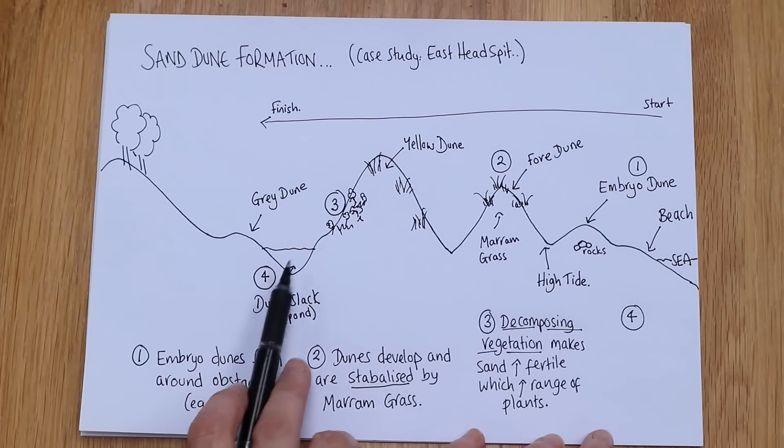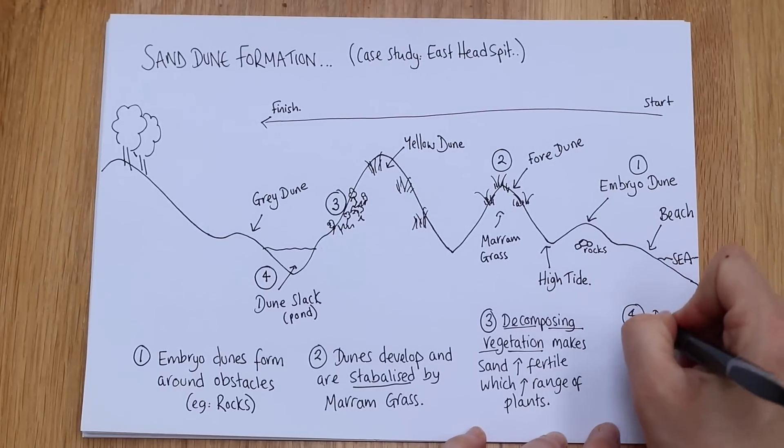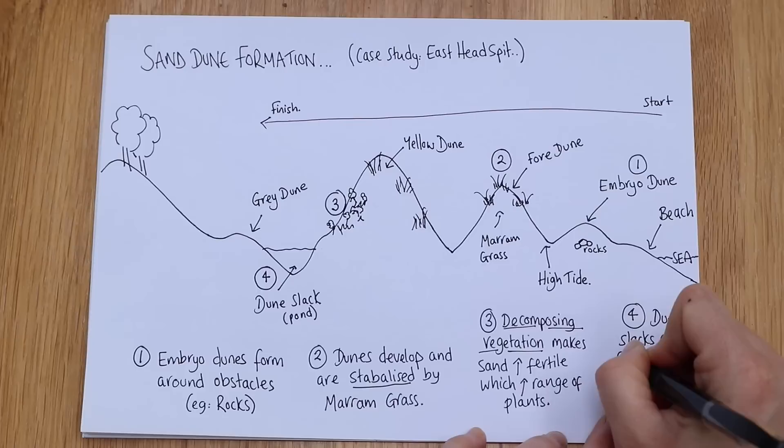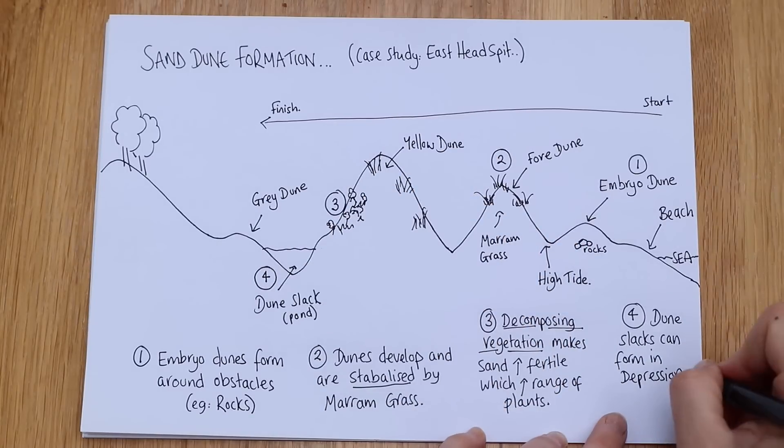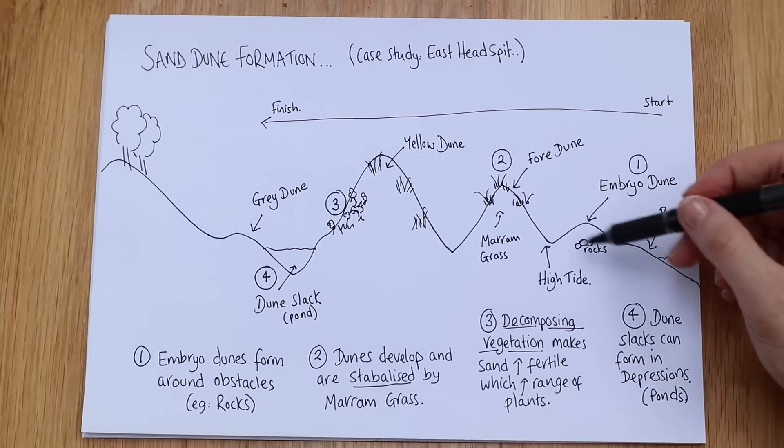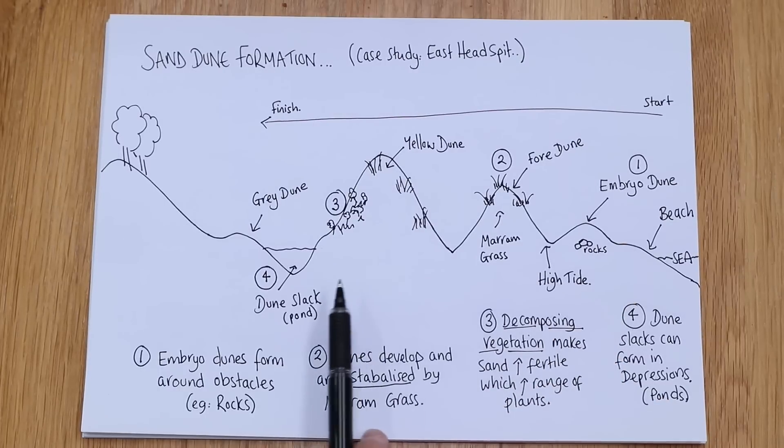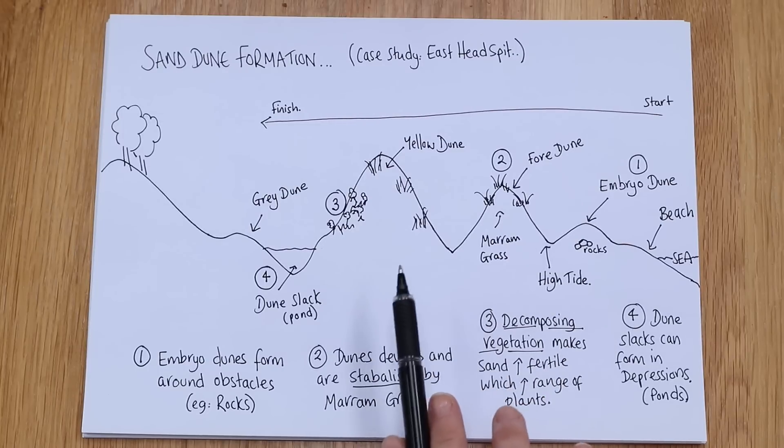But number four is this pond, this dune slack as we call it, and how it can form in depressions. So rainfall can fill up and they can actually make what we call ponds or dune slacks. So let's put that in there, dune slacks. A depression is just, in this sense, it's just a dip. Okay, and if you can't remember dune slacks just remember ponds. They wouldn't ever happen this end of the formation, but as I said in Saunton this can go half a mile before you get to this stage, whereas in East Head it might only be 10, 20, 30 meters.